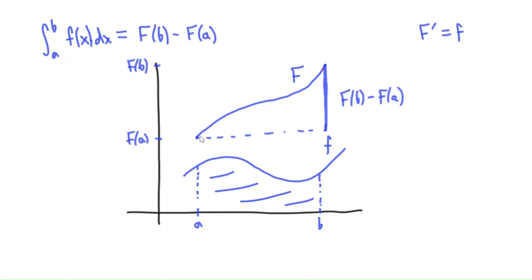I also want to point out that we're looking at one particular antiderivative. There are other antiderivatives, but they're all just vertical translations or shifts of this one. So if we shifted F up a little bit, or shifted down, those would also be antiderivatives. But notice the amount that any one of those antiderivatives rises would be the same — the same length. So the question now is: why is this area equal to this length?